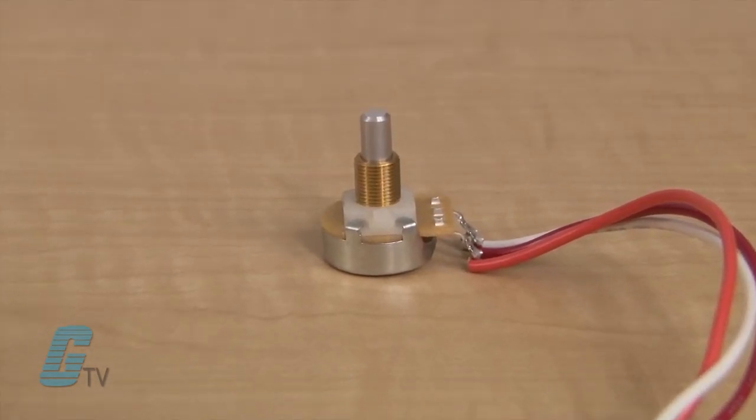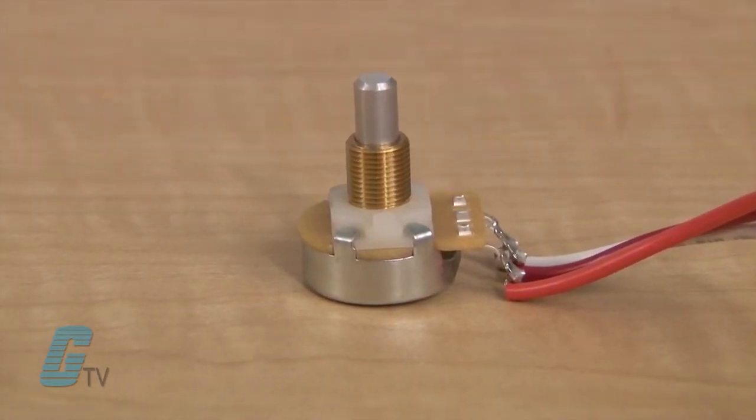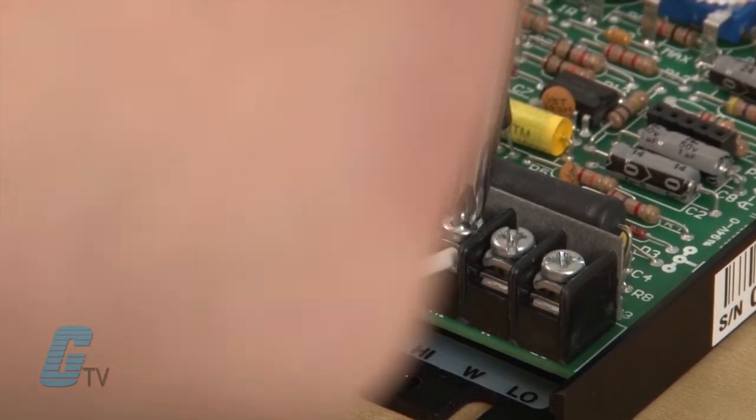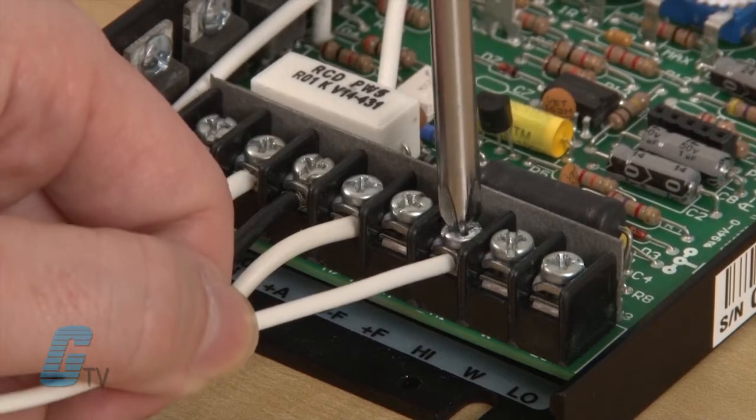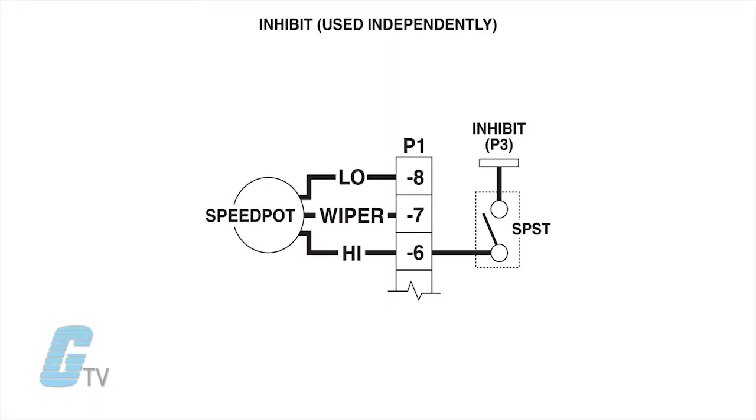My last three connections on the terminal are for the potentiometer. The sixth terminal is for the high connection on the speed pot with the white wire. It is also a 12 volt connection where an inhibit switch can be installed between this terminal and P3. This requires a single pull, single throw switch.